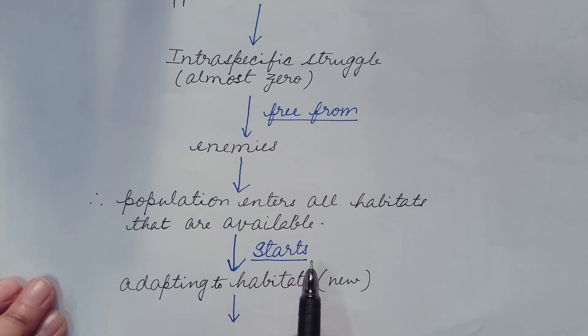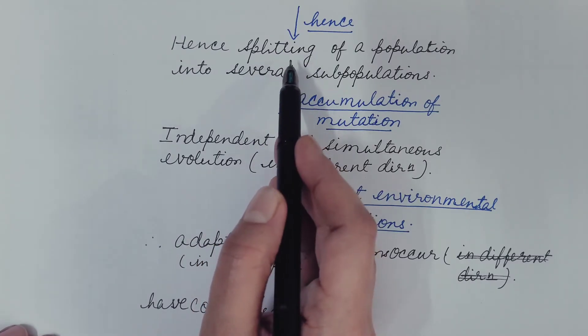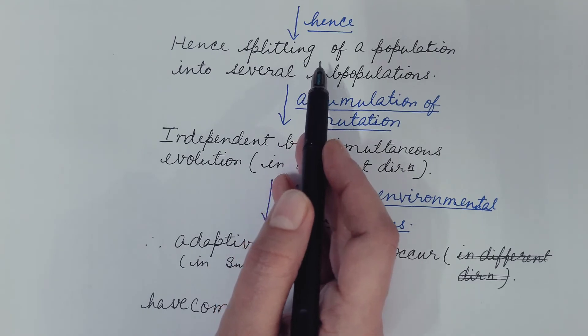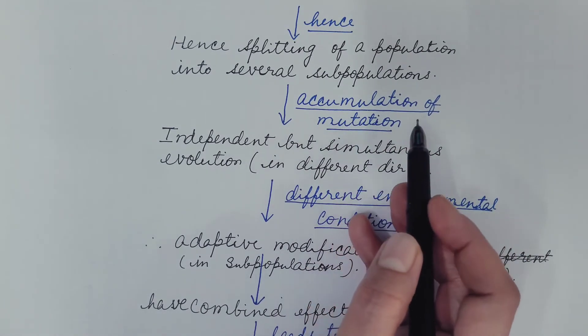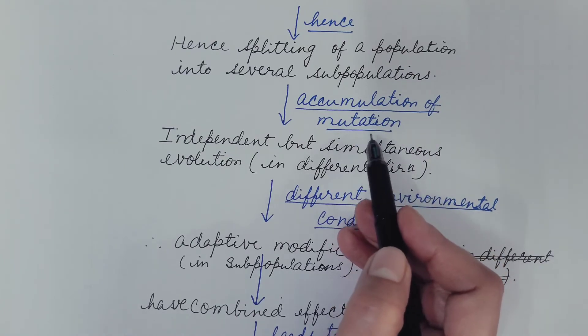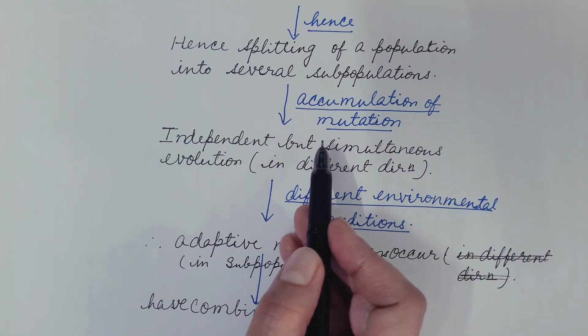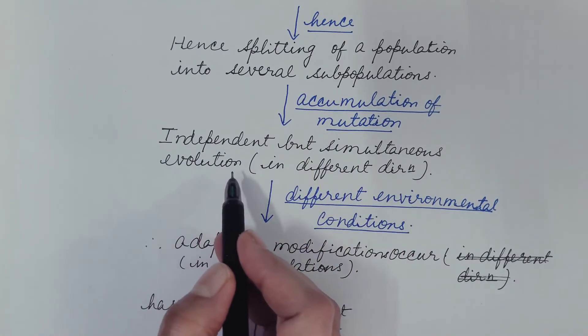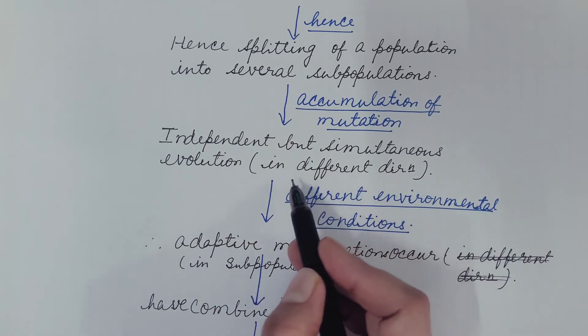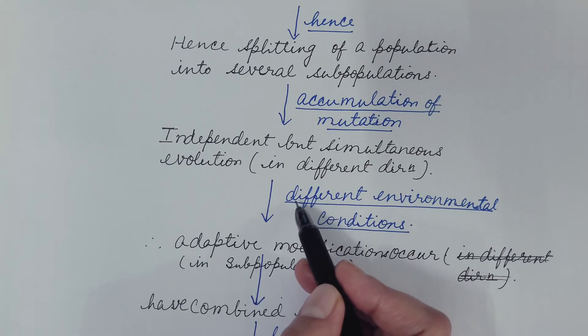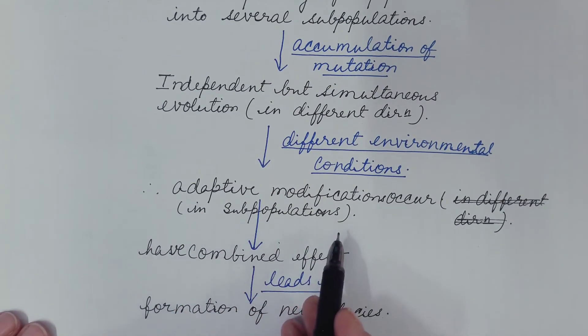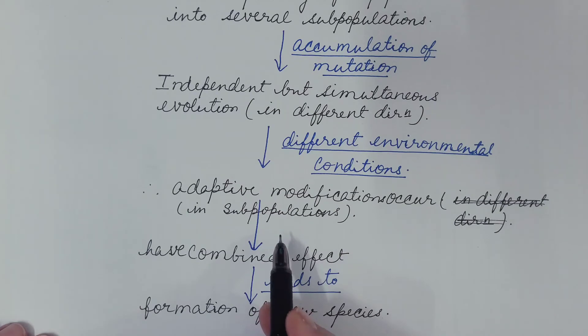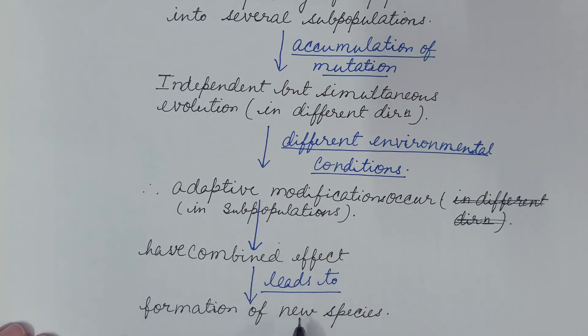Then these start adapting to the new habitats. Hence, depending upon the different habitats and their adaptation, population splits into several subpopulations. Then these also start accumulating mutation. And due to the accumulation of the mutation, independent but simultaneous evolution takes place in different subpopulations in different directions. Depending upon the different environmental conditions, adaptive modifications occur in each subpopulation. And the combined effect of these modifications leads to formation of new species.